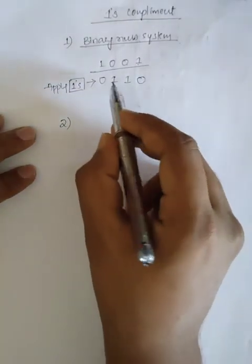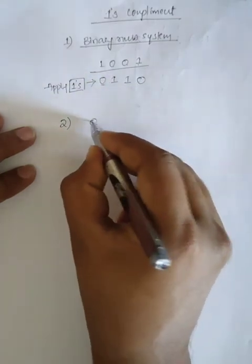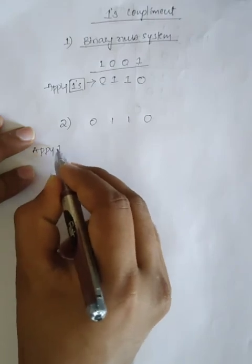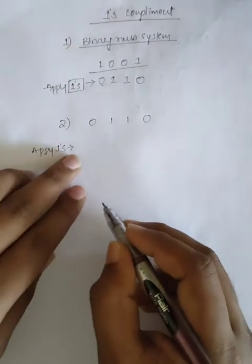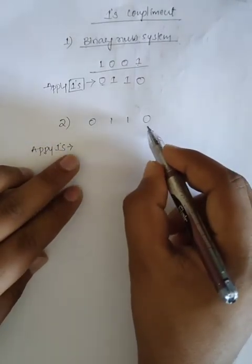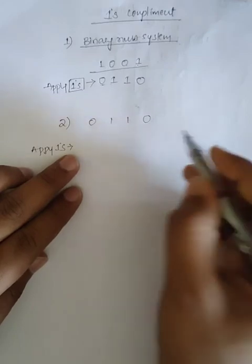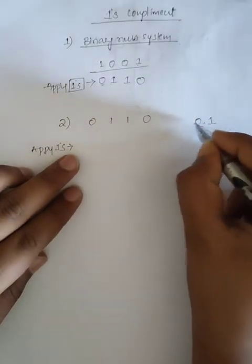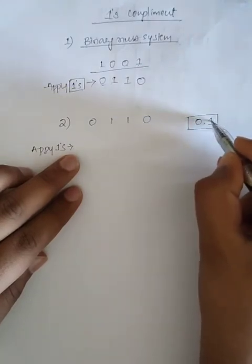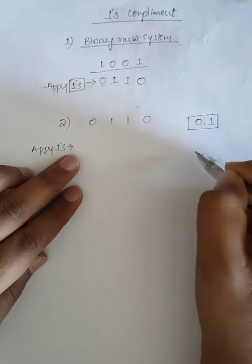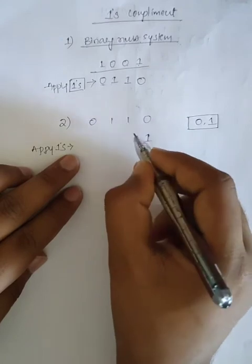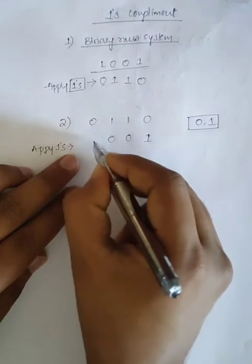I will take example two using the previous result: 0 1 1 0. Apply ones complement — the rule is reversing the binary digit numbers. What is the reverse of zero? It is one, because we only have zero and one in binary. If we have zero, the reverse is one; if we have one, the reverse is zero. So the result is 1 0 0 1. This is the ones complement.